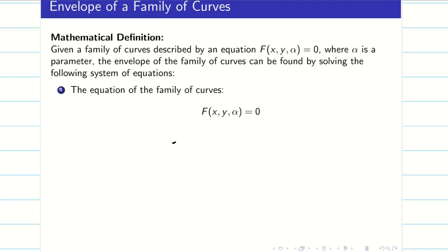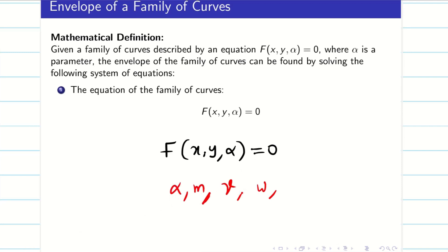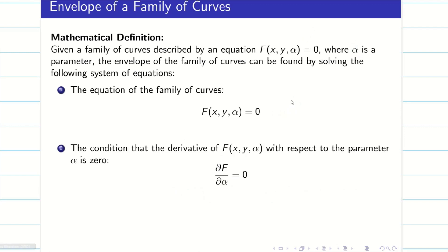We can see the mathematical definition. The equation of family of curves is in terms of x, y, and alpha — though the parameter need not always be alpha; sometimes they will mention m, gamma, w, or theta. For a given family of curves described as F(x, y, alpha) = 0, where alpha is the parameter, the envelope can be found by solving this system of equations along with the condition of differentiating F partially with respect to alpha. Solving these two equations simultaneously, we can find the envelope for the given curve.